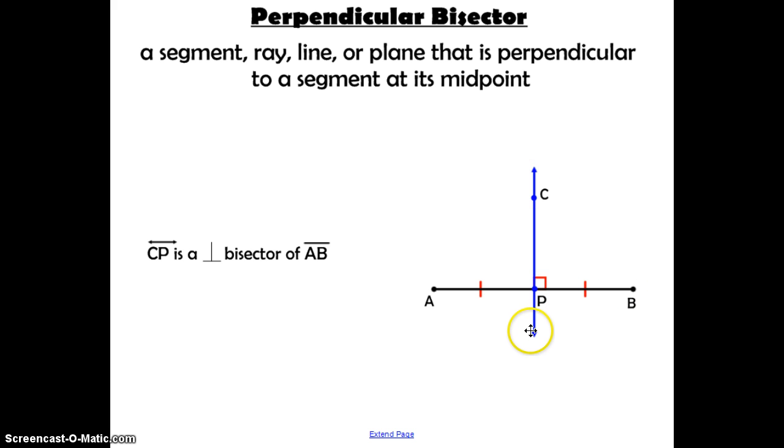Then we have this line CP that goes through that midpoint, but it's also perpendicular. Therefore we would call it a perpendicular bisector.